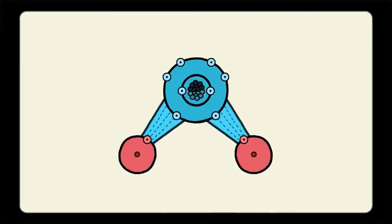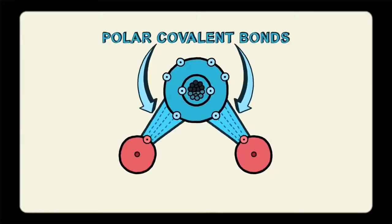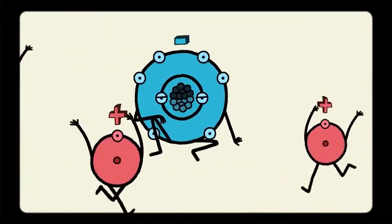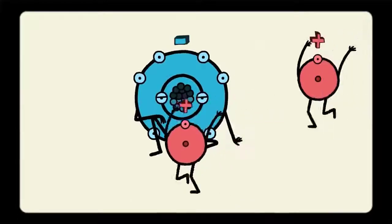The bonds within a single water molecule are called polar covalent bonds. Covalent means that the electrons are shared. But, as we just learned, polar means that these electrons are not shared equally. In water, the oxygen acts negative, and the hydrogens act positive.